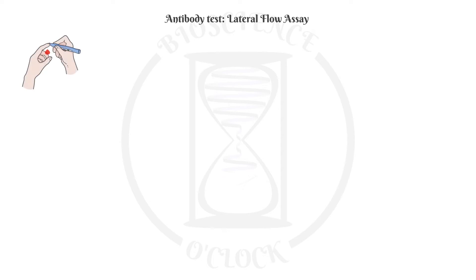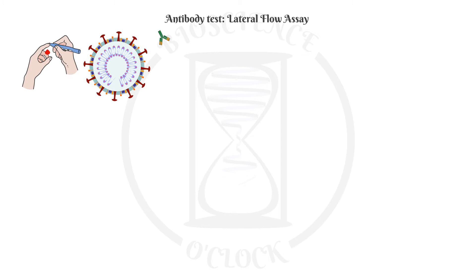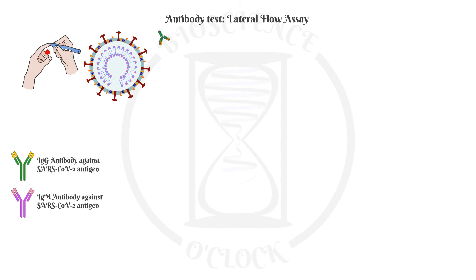The first antibody test we will explain is the lateral flow assay. A sample of serum, plasma, and sometimes blood is taken to look for antibodies against SARS-CoV-2. When a person is infected with the virus, the immune system generates antibodies against viral antigens. These tests look for either IgG or IgM, or both IgG and IgM antibodies against SARS-CoV-2. The majority of these tests focus on antibodies against the S and N proteins of SARS-CoV-2.